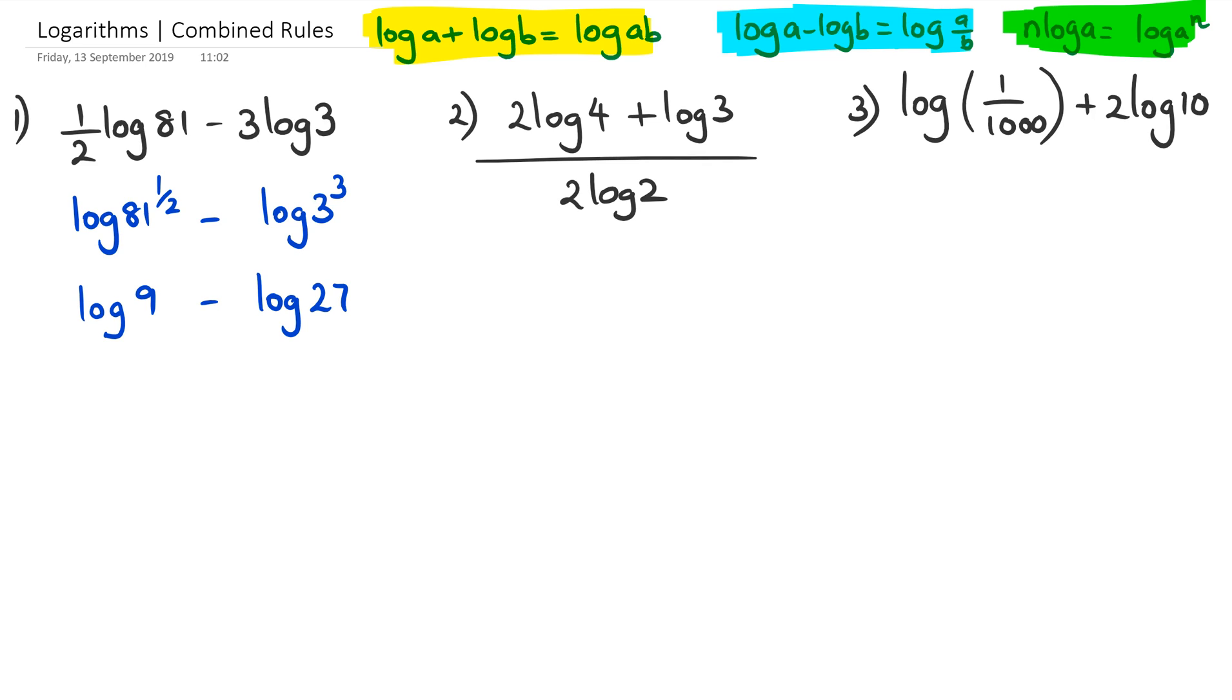I can keep going. Now I'm going to use the blue rule, which is when we subtract, we divide the numbers. So this becomes log(9/27), and 9/27 is simply log(1/3). What we're basically trying to do is rewrite these log expressions to the smallest version possible.